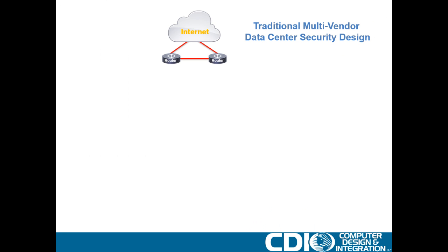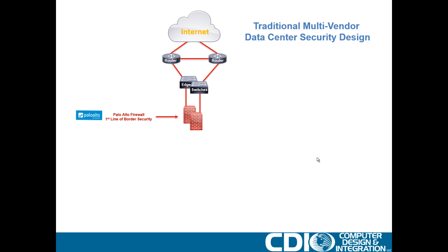Before we go into the ACI design, I want to go through what the traditional multi-vendor data center security design would look like — if we were just to deploy a multi-vendor strategy using traditional technologies and configurations. We would start off by creating our internet connectivity, positioning one or two internet edge routers with a BGP routing relationship with the ISP, and plugging those routers into internet edge switches. These can be stacked or standalone switches, with routers dual-homed or single-connected as your design requires.